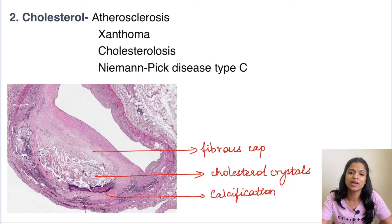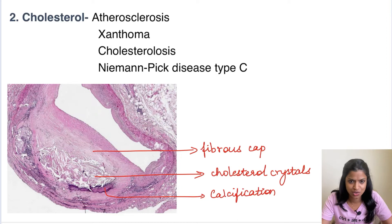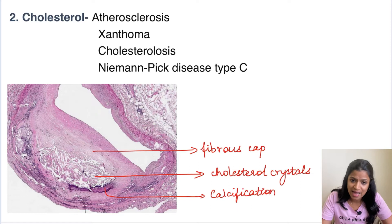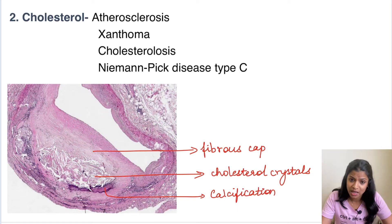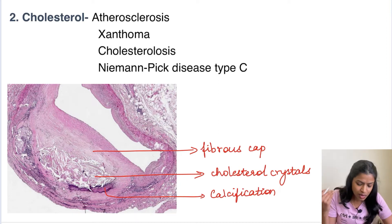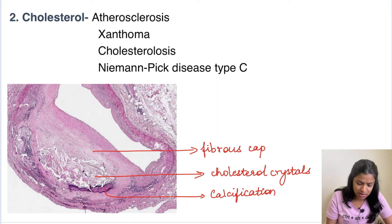Moving on to the next type of lipid deposition — cholesterol. Cholesterol can accumulate in various conditions like atherosclerosis, xanthomas, cholesterolosis, and Niemann-Pick disease, which is an inherited lysosomal storage disorder. We will see each of these one by one.